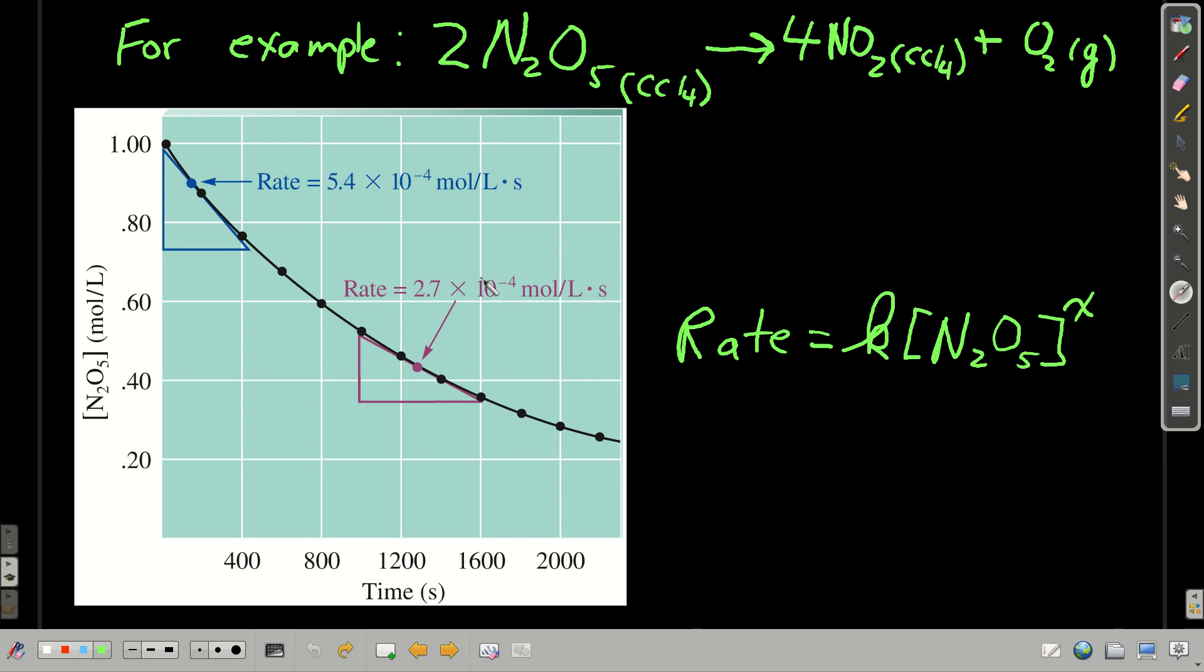And so for this reaction here, we have the rate is equal to the rate constant times the concentration of the reactant to some power X, which we want to find. And what we have, we're going to use instantaneous rate data. We have the rate at 0.90 moles per liter concentration of dinitrogen pentoxide and somewhat later at 0.45, that's 0.45 moles per liter dinitrogen pentoxide. If you look at these numbers, you can see basically they're cut in half. So let's look at that.